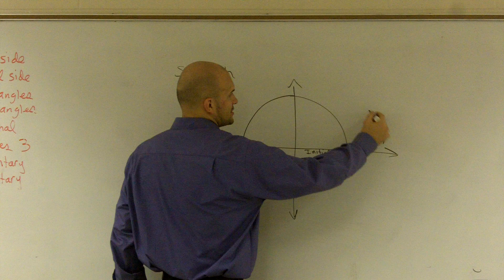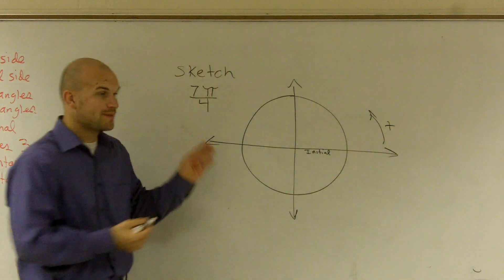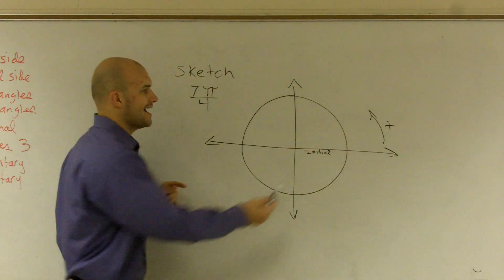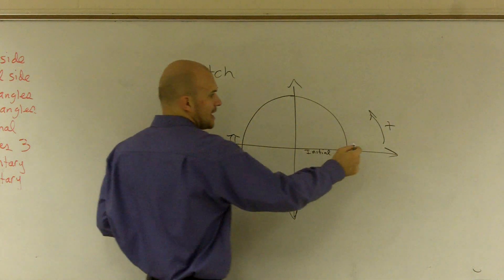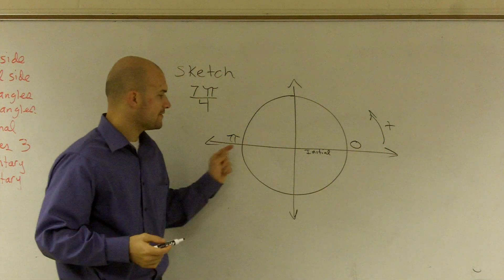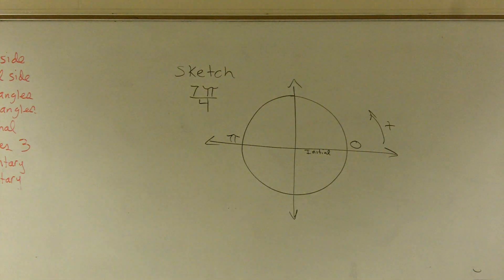Remember, I'm going to go in this direction because it's positive. My angle's positive, so I'm going to go in this direction. I know that halfway around a circle is equal to π. I'm going to start at 0, halfway around the circle is π, yes?